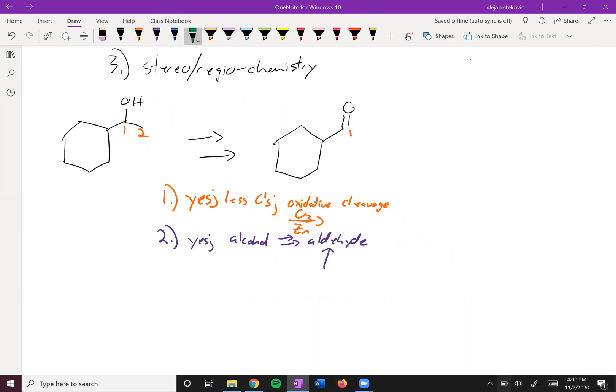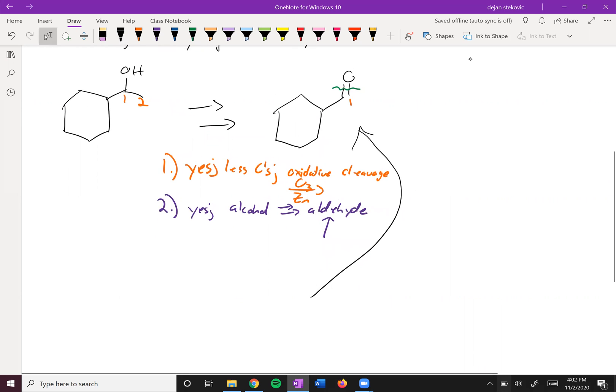And so applying that retrosynthetic analysis, that must have meant that we cleaved right here, which means that the previous component was this alkene right over here, and we added O3 and zinc to it.